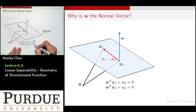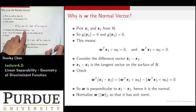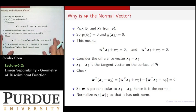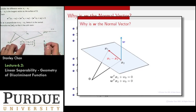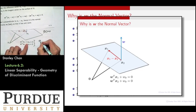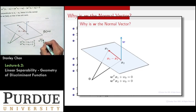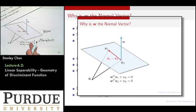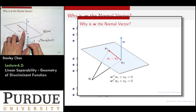You can take the difference between these two equations. Considering the difference between x_1 and x_2, you can show that w transpose of (x_1 minus x_2) equals 0. Because you take the first equation minus the second, the w_0 terms cancel, giving you this equation.